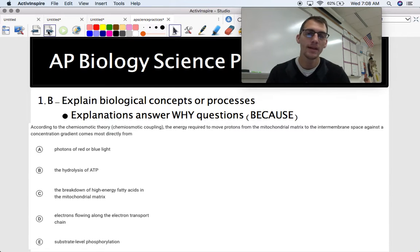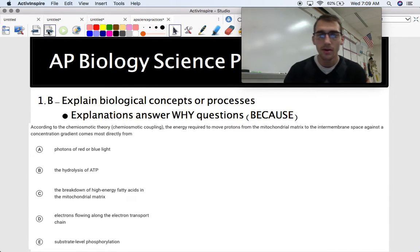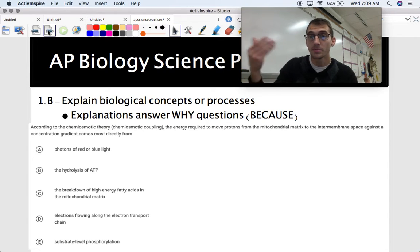1B is explaining biological concepts. And something that a lot of kids don't understand is that the difference between asking to describe something and asking to explain something is that an explanation answers a question that begins with why, typically. And the questions on the AP exam that are going to ask you to explain stuff, well, I mean, the explaining part comes from, it will be like in an FRQ, but in this kind of question right here, a multiple choice question, you have to be able to explain things in order to answer this question correctly.